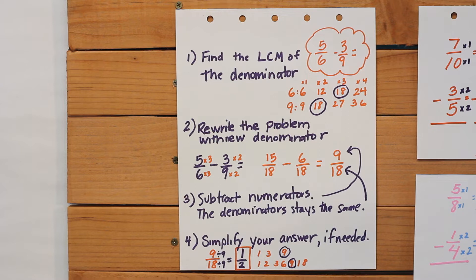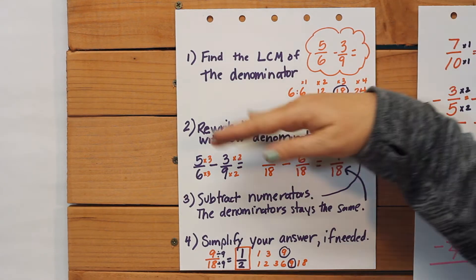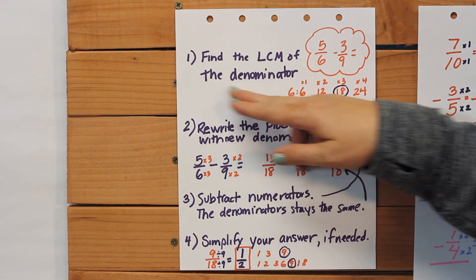So let's review the steps and we'll just check this out. The first is number one. We're going to find the least common multiple of the denominator.